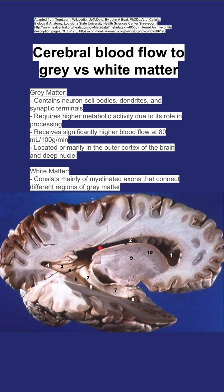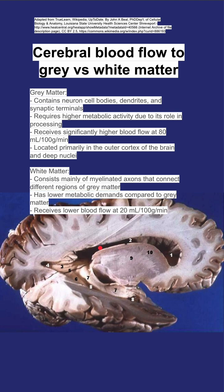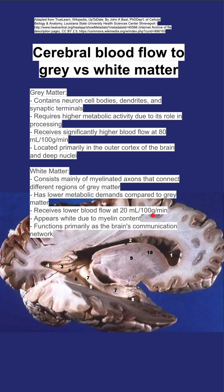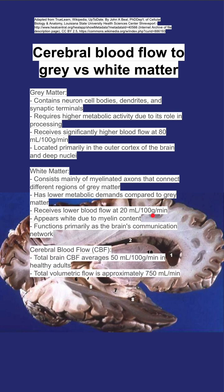The white matter, on the other hand, consists mainly of myelinated axons that connect different regions of gray matter. It has a lower metabolic demand compared to gray matter and receives lower blood flow at 20 cc's per 100 grams of tissue per minute. It appears white due to its myelin content and functions primarily as the brain's communications network.